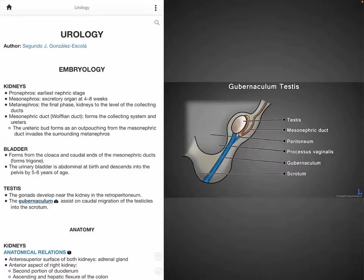The mesonephros includes the mesonephric duct, and the final system is the metanephros, which forms the kidneys and consists of the ureteric bud, which is an outpouching of the mesonephric duct that forms the collecting system and ureter, as well as the metanephric blastema, which forms the nephrons, which is the functional unit of the kidney.